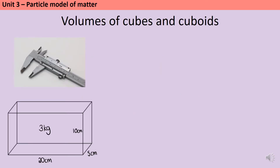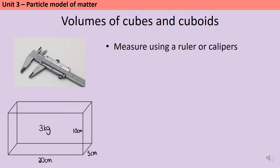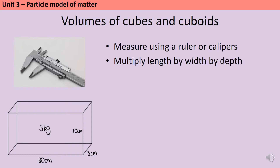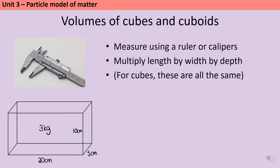Let's start by looking at regular objects. To calculate the density of any object you need to know its mass and also its volume, and for a regular object like a cube or a cuboid it's possible to calculate this. Firstly I'll need a ruler or some calipers in order to take accurate measurements of the lengths and widths of the object. For a cuboid we need to multiply the length by the width by the depth, but for a cube those are all the same so you can just measure one side and cube that number. This gives us the volume, which we then combine with the mass to calculate density.